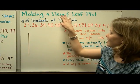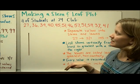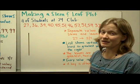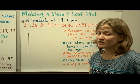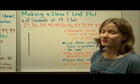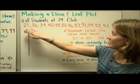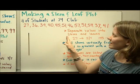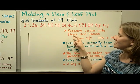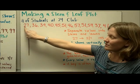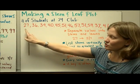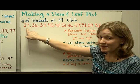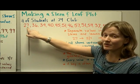The steps for making a stem and leaf plot are listed here. We're going to make a stem and leaf plot using data collected of the number of students that attend 24 Club for a series of 12 weeks. The first step is to separate values into stems and leaves. For example, 27 would be separated into two parts: the 2 in the tens place becomes the stem, and the 7 in the ones place becomes the leaf.